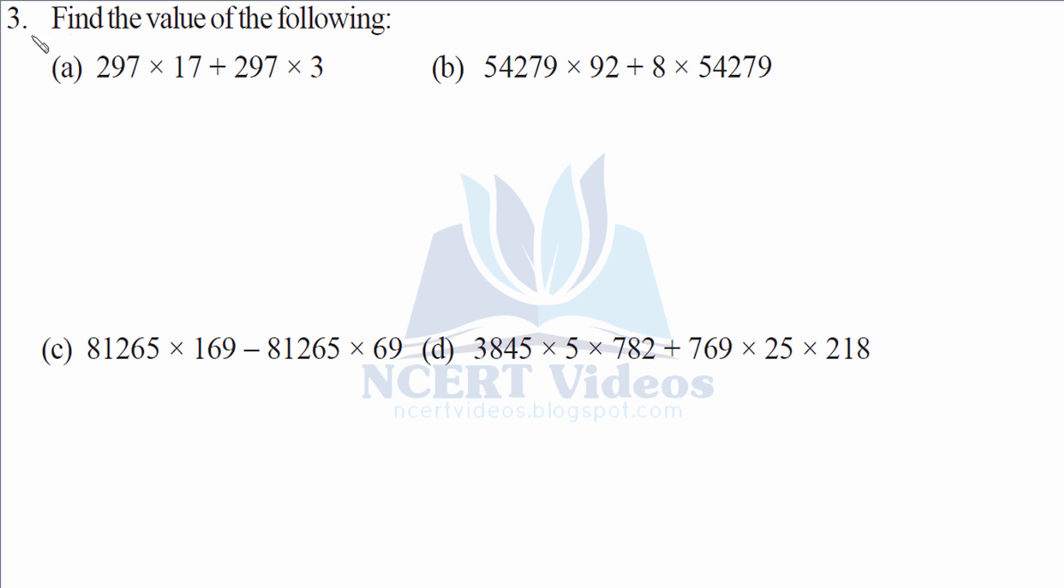Third, find the value of the following. Now we have to use properties that we have studied in this exercise. Look, 297 is common. Take it as common. And now 17 and 3 would be added up because addition sign is there. It is a distributive property. So 297 into 20 gives you, when you multiply it, 5940 as your answer.